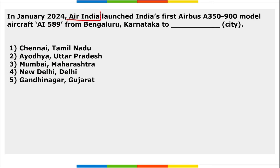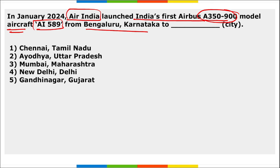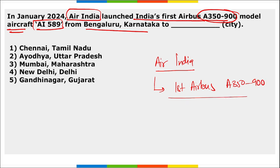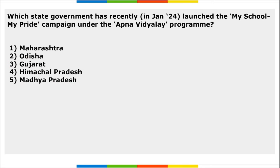Air India launched India's first Airbus A350-900 model aircraft — flight AI589 — from Bangalore, Karnataka to Mumbai, Maharashtra.